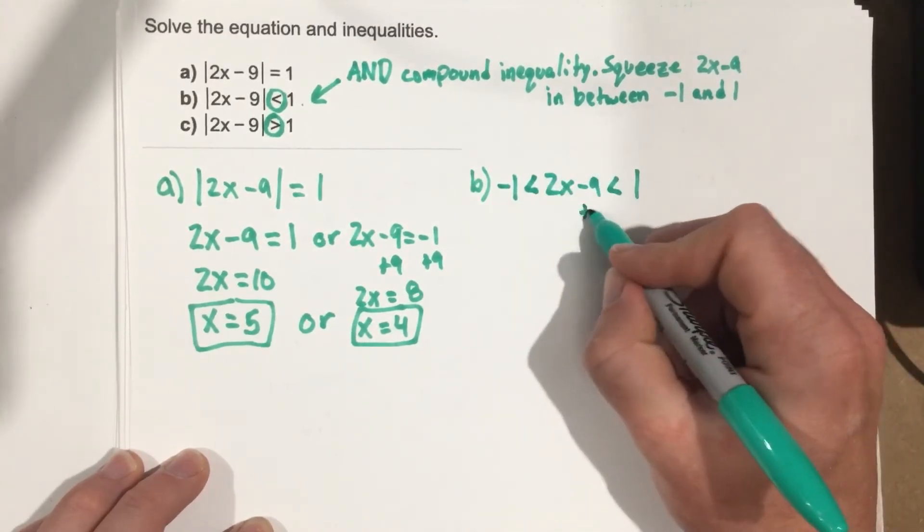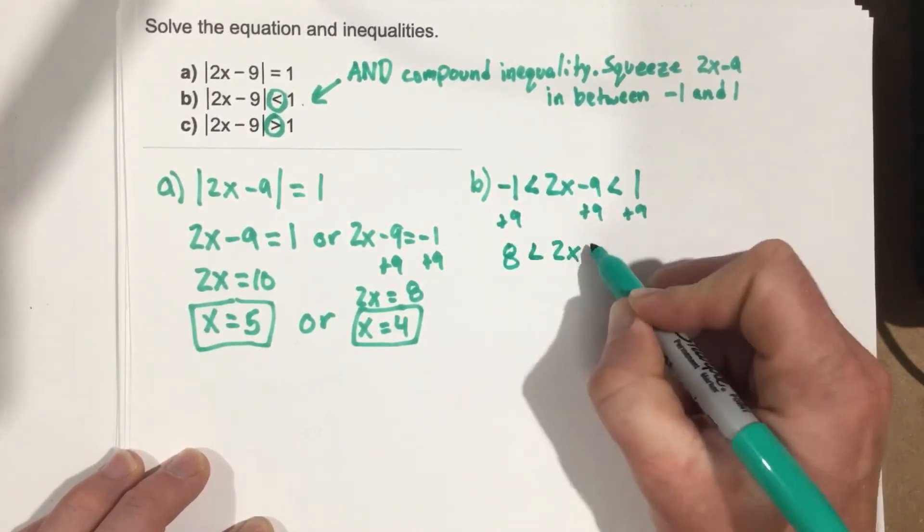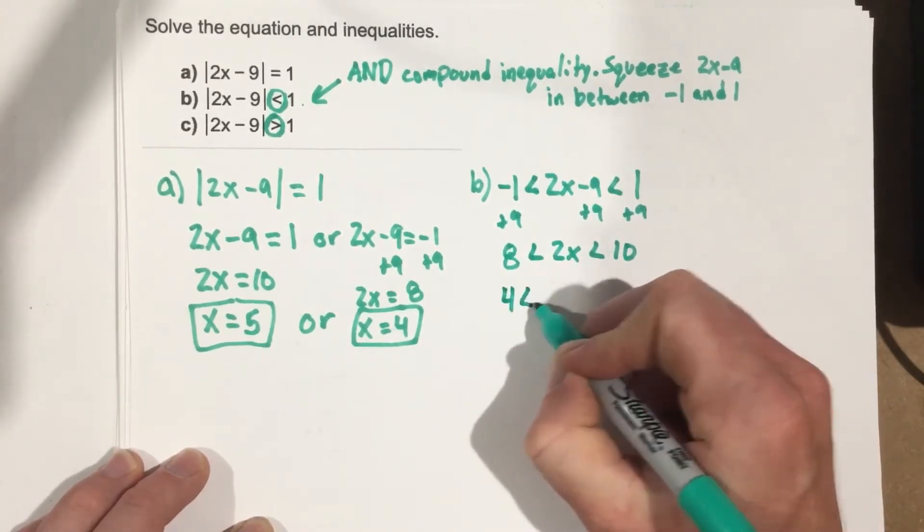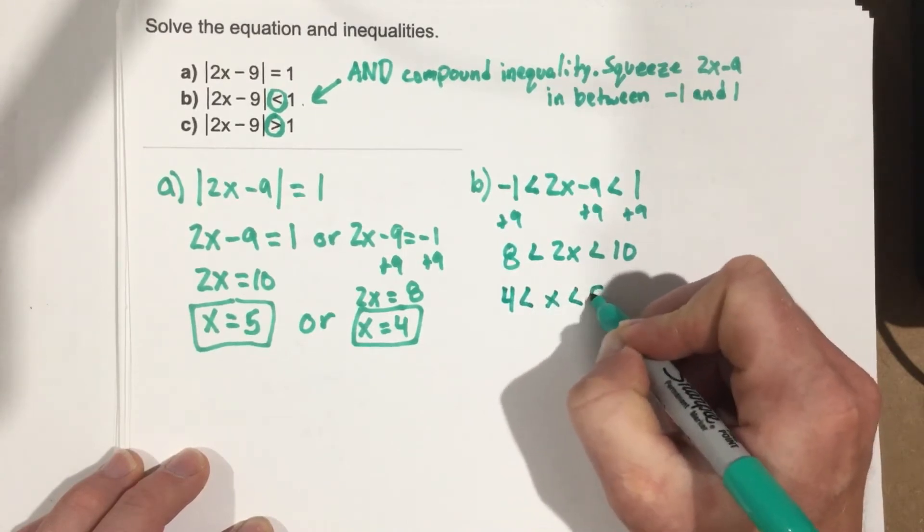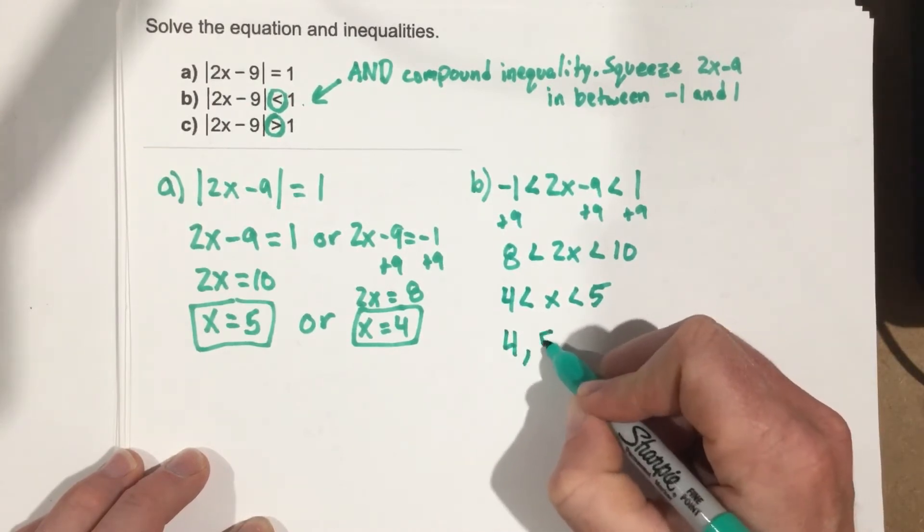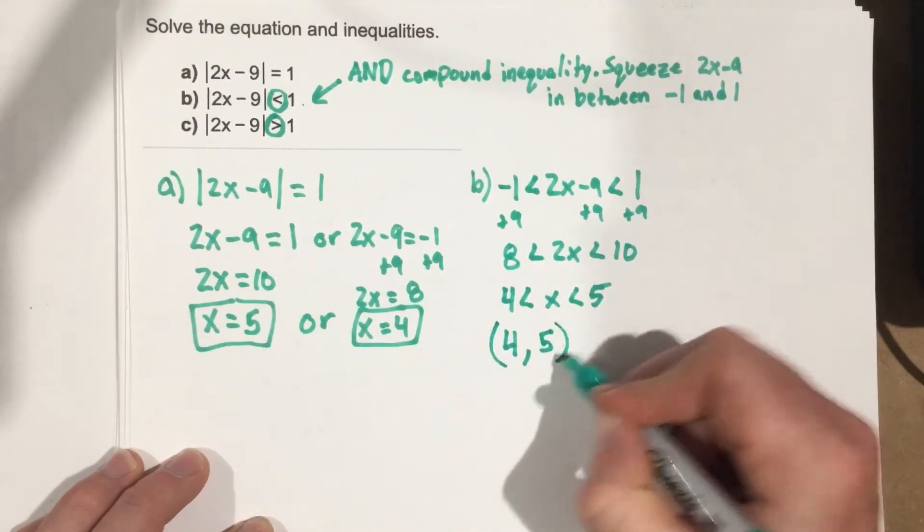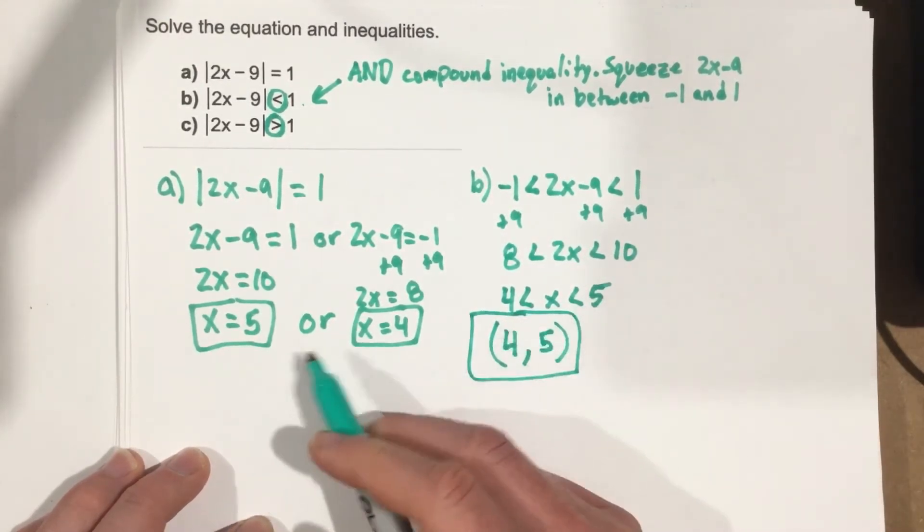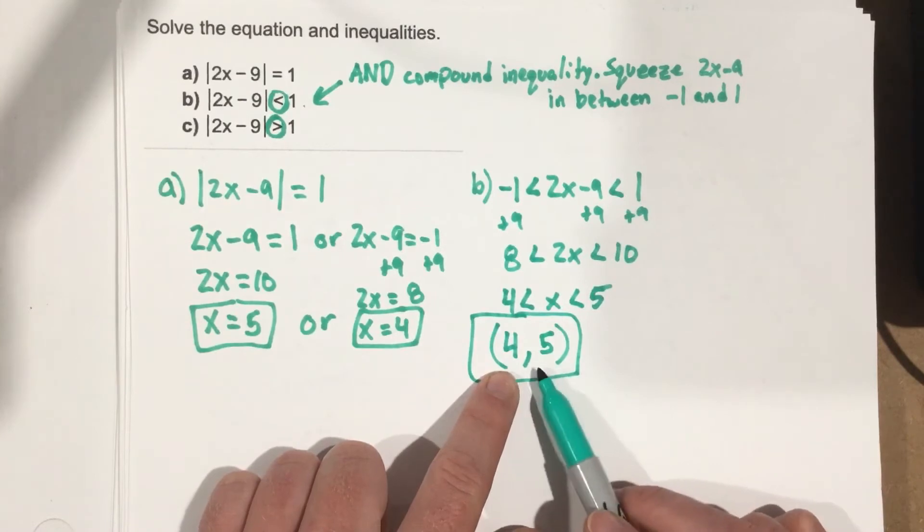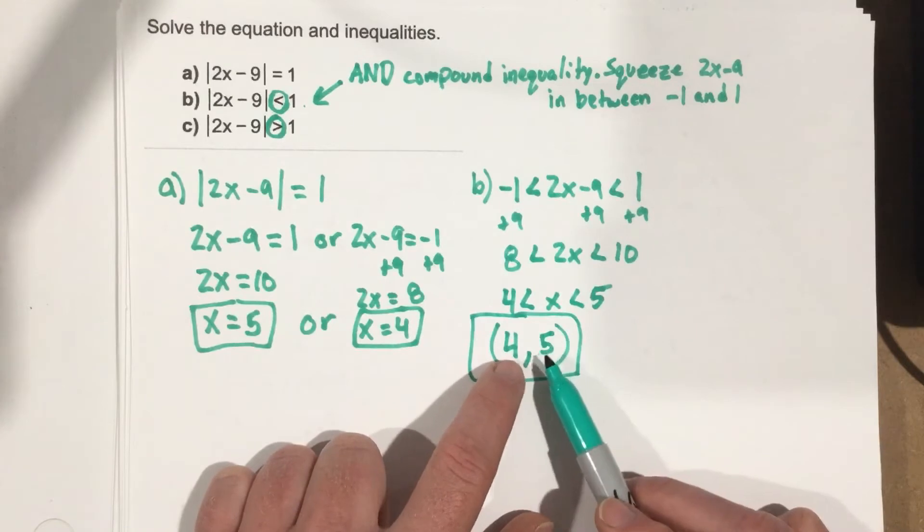Now we're going to add 9 to each side. We get 8 less than 2x less than 10. Divide by 2, and we get 4 less than x less than 5. So our solutions for this problem are going to be from 4 to 5. But because we use the less than sign, we've got to use parentheses for our interval notation. So in our first problem, because it's an equation, we have two solutions. In our second problem, we have a range of solutions between 4 and 5.